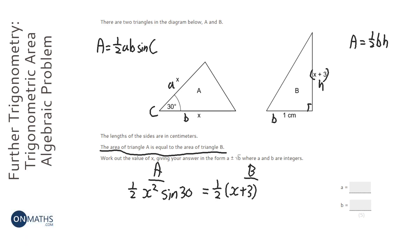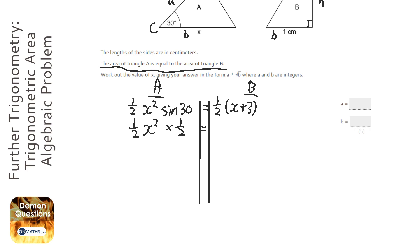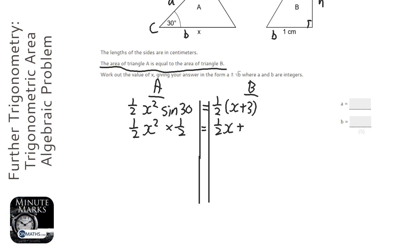We're going to tidy this up a little bit. You need to know that sine 30 is a half — that's a requirement for the exam, you need to know that without a calculator. There are loads of videos on exact values you need to know. So expanding the bracket, we get half x plus one and a half.